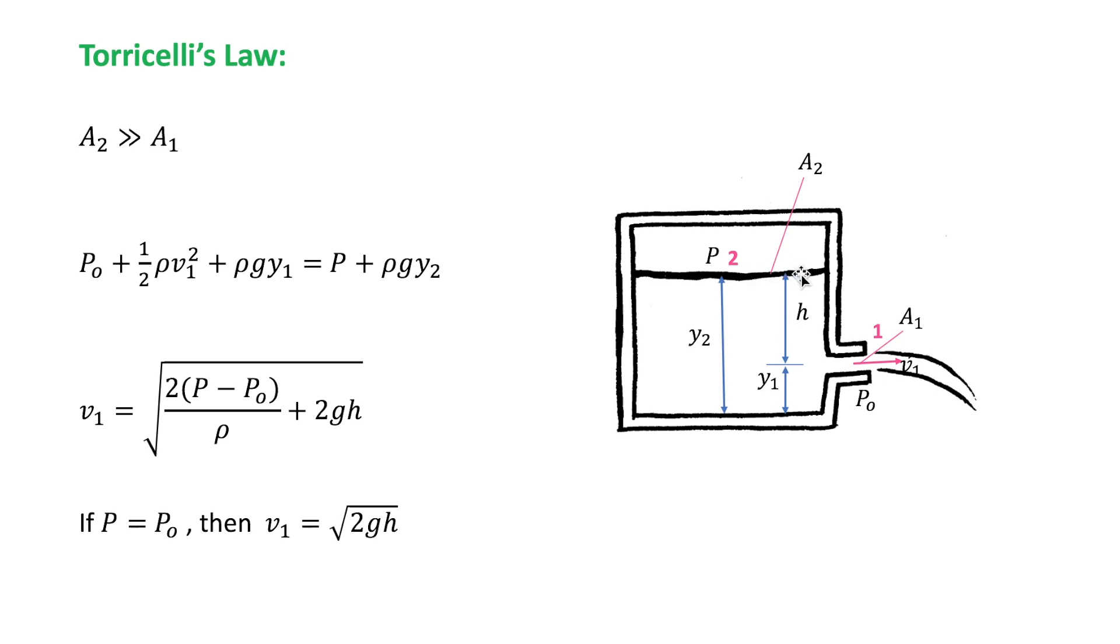So, if we apply Bernoulli's equation between point 1 and 2, we can find the speed of exit V1 from the hole. So, V1 is equal to square root of 2P minus P1 over rho plus 2GH.